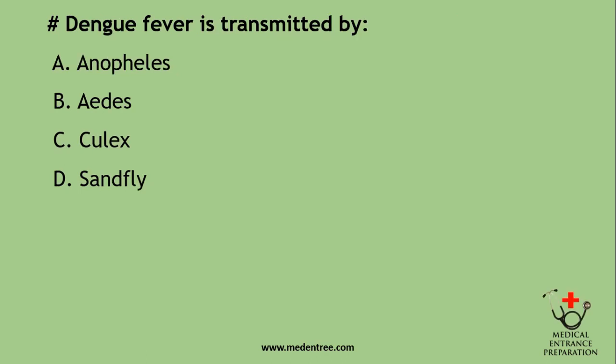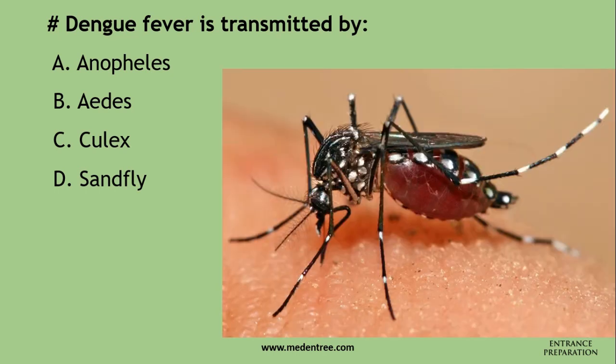Dengue fever is transmitted by Anopheles, Aedes, Culex, or sandfly? The correct answer is Aedes mosquito. This is a picture of the Aedes mosquito and it is characteristic that whitish spots are found all over its body.